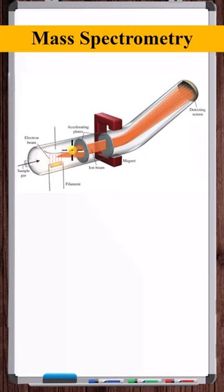Two oppositely charged plates then accelerate the ions through the spectrometer. A magnet then deflects the ions, and the resulting position of the ions is detected by a detecting screen.